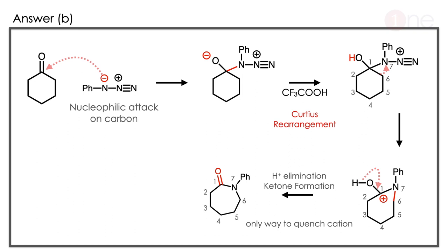The reaction is a Curtius rearrangement, but it occurs in a cyclic system, so you need to know the mechanism very well. Here we write it with the azide — the negative charge on nitrogen attacks the carbonyl carbon in a nucleophilic attack, so the carbonyl group opens and O⁻ is formed. Nitrogen is the leaving group. Then trifluoroacetic acid donates a proton. The system is activated because of the nitrogen leaving group, so the sixth carbon or methylene carbon migrates to nitrogen, which is now in the seventh position — so the ring expands. The carbocation forms at the first position because we are breaking the ring. The positive charge is then quenched by hydrogen leaving, so the positive charge is quenched and a ketone forms.